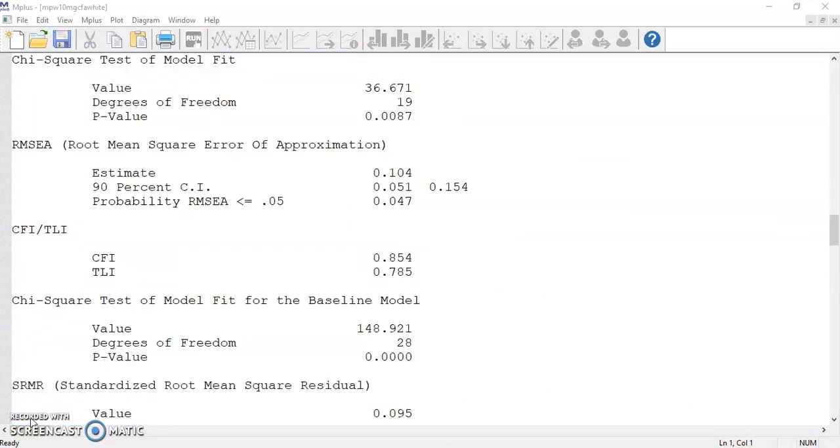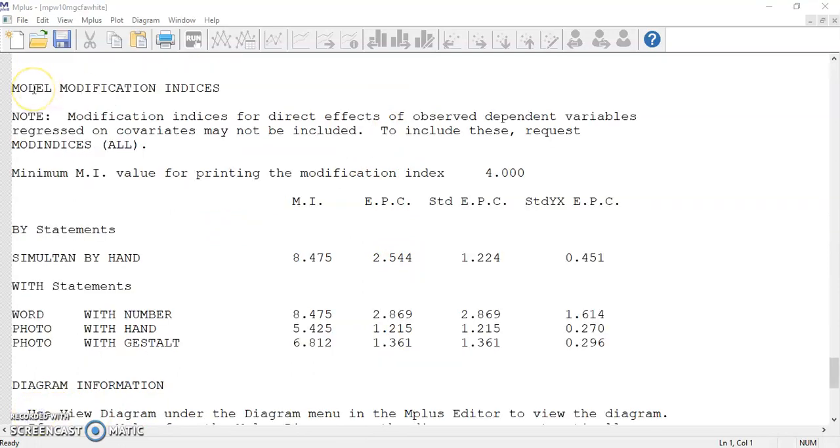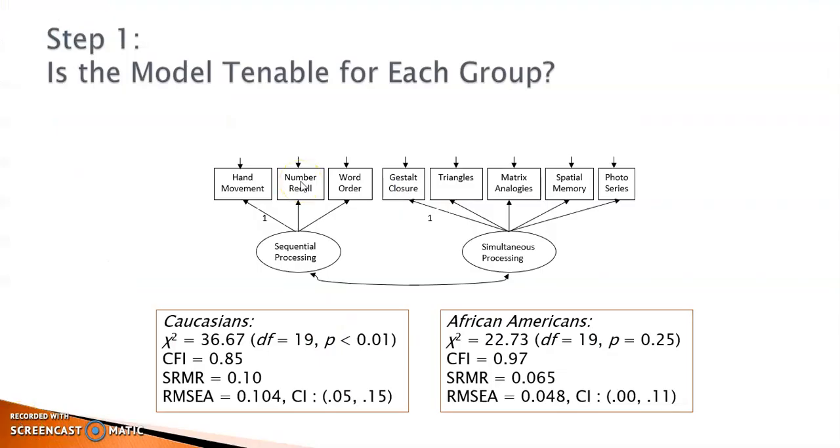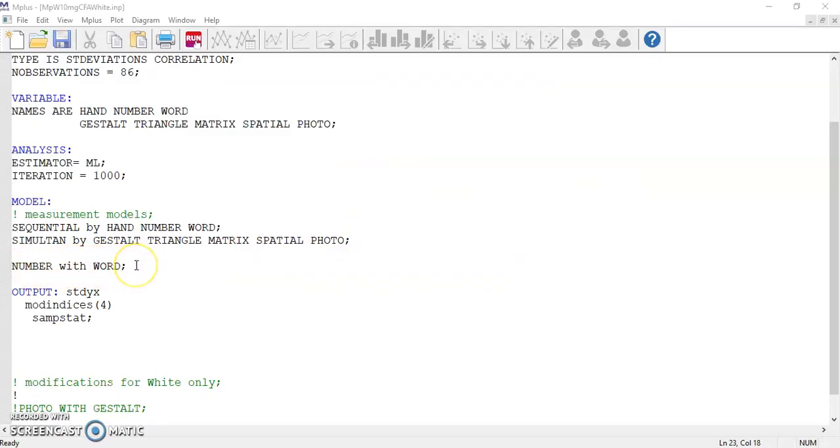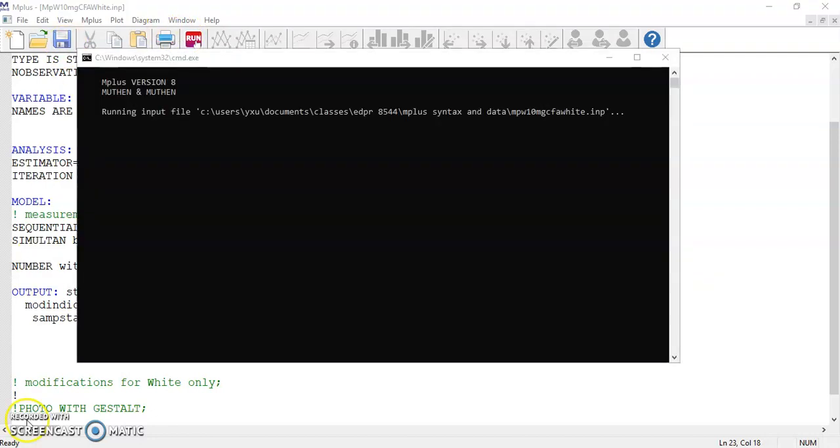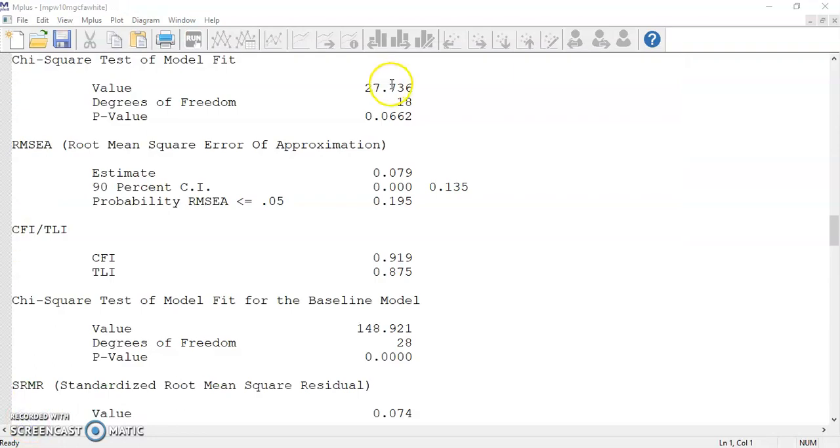Group 1 with Caucasian children, the fit indices in the output file are not so good. I need to see whether there are possible changes in order to improve the model. Based on the model modification indices, adding a correlation between the error terms of word and number could reduce the model chi-square by 8.475. Since they are two of the indicators measuring sequential processing, I decide to add this change to my command file. Save and run the command file again.